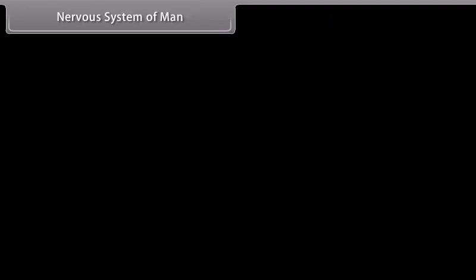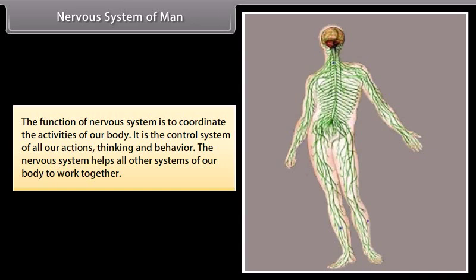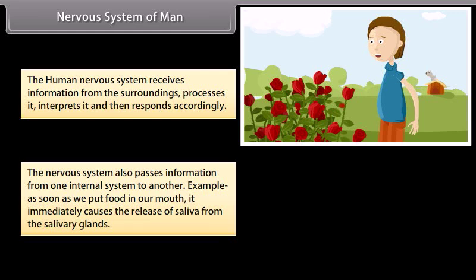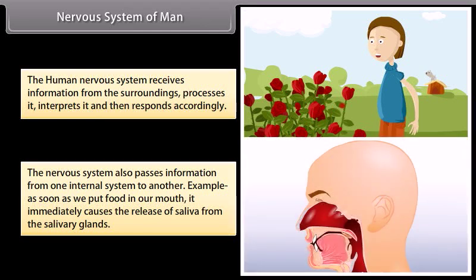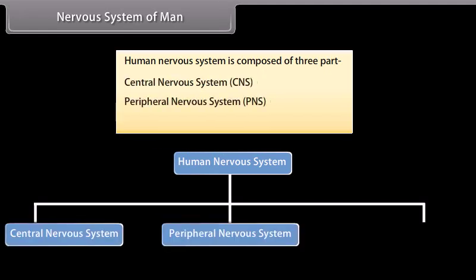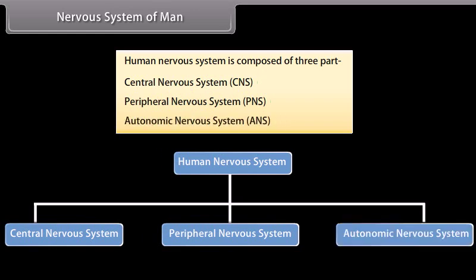The function of the nervous system is to coordinate the activities of our body; it is the control system of all our actions, thinking, and behavior. The nervous system helps all other systems of our body to work together. The human nervous system receives information from the surroundings, processes it, interprets it, and then responds accordingly. It also passes information from one internal system to another — for example, as soon as we put food in our mouth, it causes the release of saliva from the salivary gland. The human nervous system is composed of three parts: the central nervous system (CNS), peripheral nervous system (PNS), and autonomic nervous system (ANS).